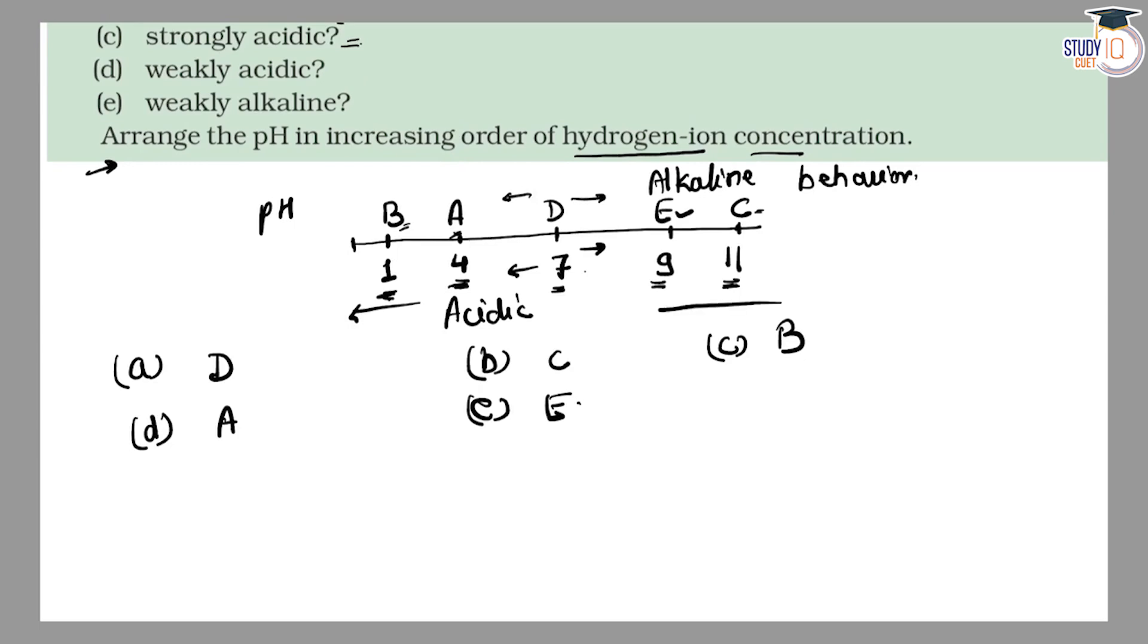Means the order will go in this direction. Hydrogen ion concentration will increase. So hydrogen ion concentration is smallest in C, then E, next D, next A, and largest in B.